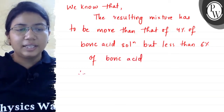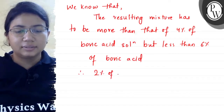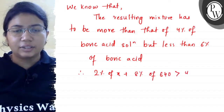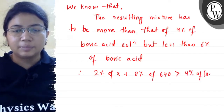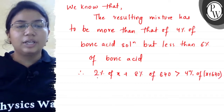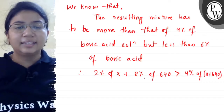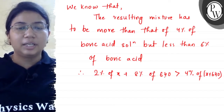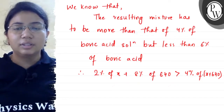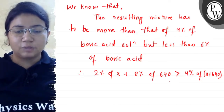Therefore, 2% of x plus 8% of 640 is greater than 4% of (x + 640). Okay?